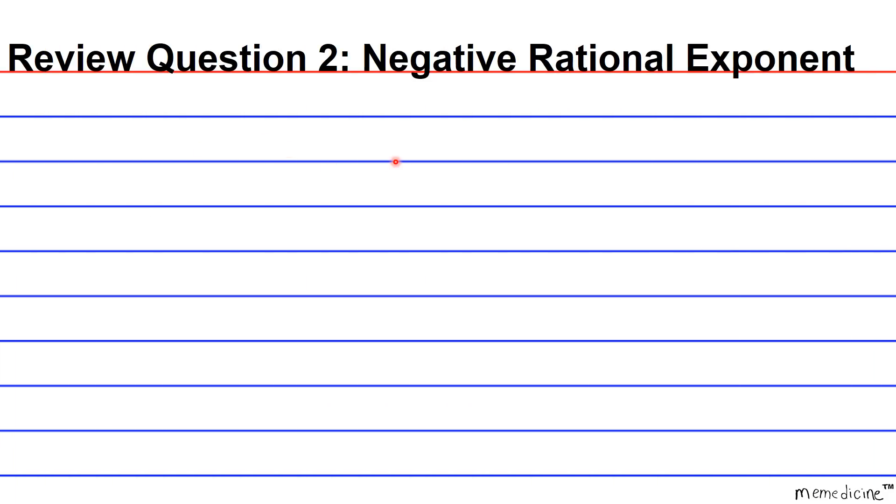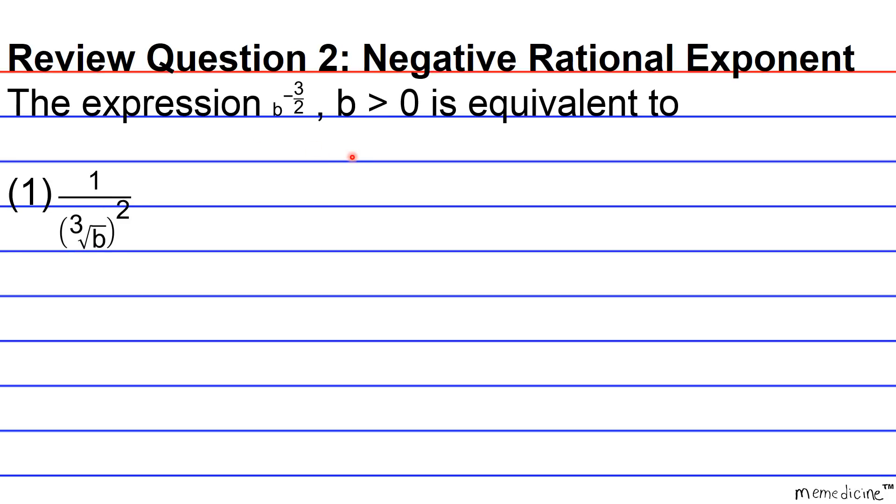Review Question 2, Negative Rational Exponent. The expression b to the negative 3 over 2, where the base b is greater than 0, is equivalent to: 1, 1 over the cube root of b raised to 2; 2, 1 over the square root of b raised to 3; 3, negative square root of b raised to 3; or 4, the cube root of b squared.